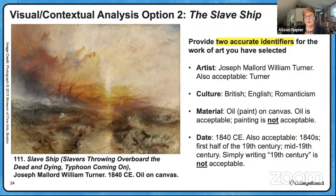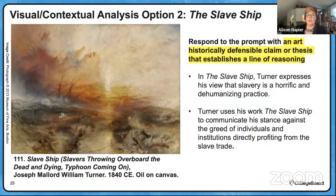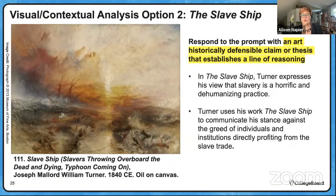Two identifiers: any two of the listed options will work together. Remember, you've been given this work in the prompt so you've got to have two identifiers in addition to what you've been given. You need to develop an art historically defensible claim. We can talk about Turner expressing his view that slavery is horrific and a dehumanizing practice, or that he's using this work to communicate his stance about the greed of individuals and institutions that profit from the slave trade.